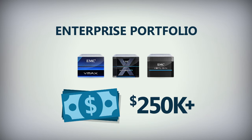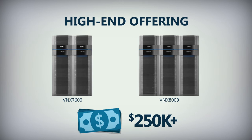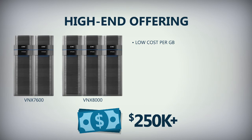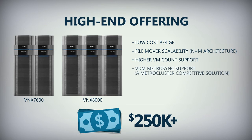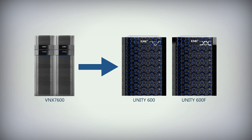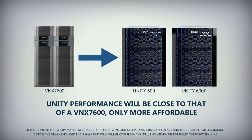You can still position and sell the VNX7600 and VNX8000 as a high-end offering when the customer requires low cost per gigabyte, along with file mover scalability, N+M architecture, higher VM count support, VDM MetroSync support, a MetroCluster competitive solution, higher port counts, and higher capacity. However, don't be surprised to see VNX7600 customers buy down to a Unity 600 or 600F, as the Unity performance will be close to that of a VNX7600, only more affordable.